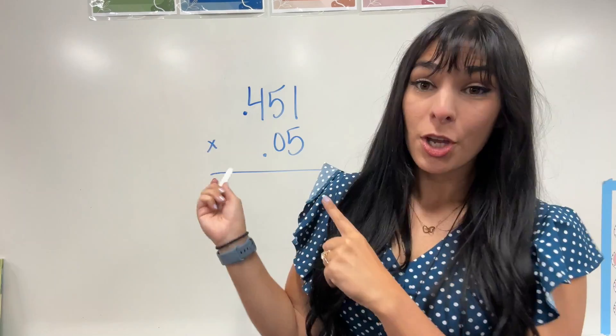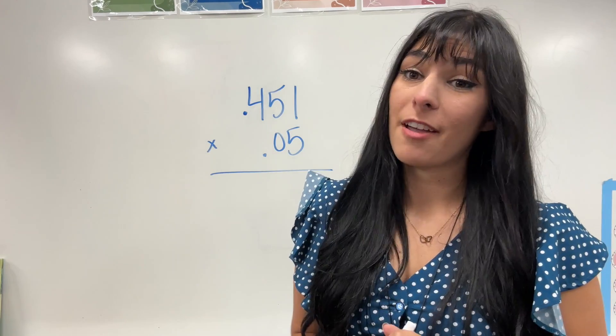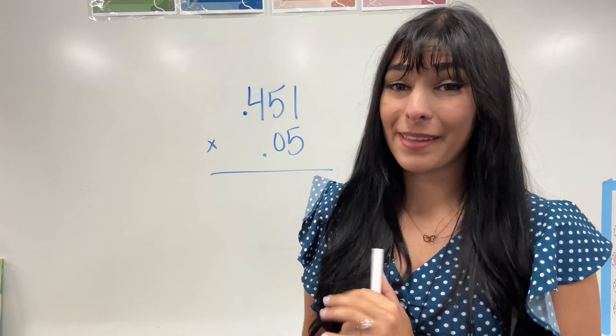Let's do another one. For this problem, I have 0.451 times 0.05. Step one, we're multiplying like normal.